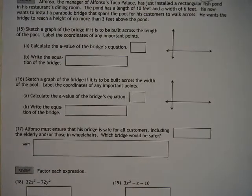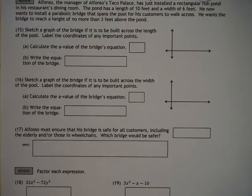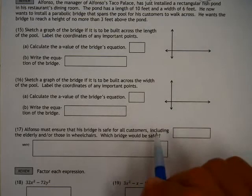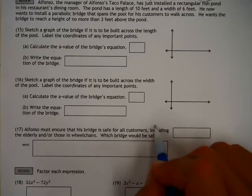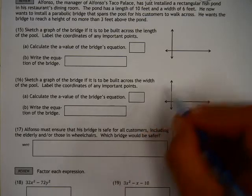The manager of Alfonso's Taco Place just installed a rectangular fish pond in the restaurant's dining room. The pond has a length of 10 feet and a width of 6 feet. Now, he wants to install a parabolic bridge that spans the pool for customers to walk across. He wants the bridge to be a height of no more than 3 feet above the pond.